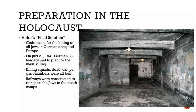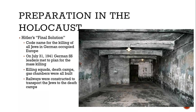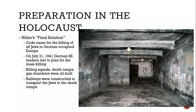During the Holocaust, Hitler started planning for his Final Solution — the codename for killing all Jewish people in German-occupied Europe. On July 31st, 1941, German SS leaders met to plan for the mass killing. Killing squads, death camps, and gas chambers were built. Railways were constructed to transport Jewish people to the death camps. Putting Jewish people in ghettos made it easy to pull a train right up, load people on, and the next stop was a killing camp.